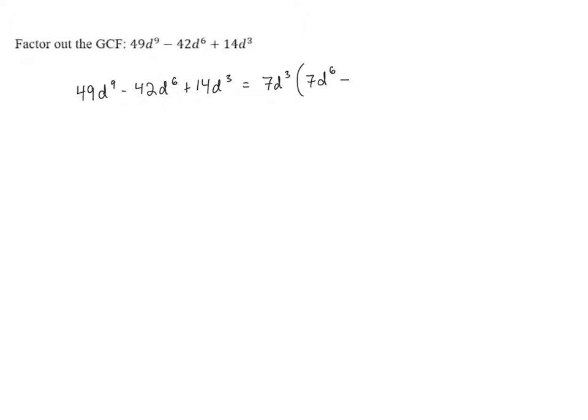Next, we have minus, because there's a subtraction here. And then we've got 42d to the 6th, and we have to pull out a 7d cubed. 42 divided by 7 is 6.